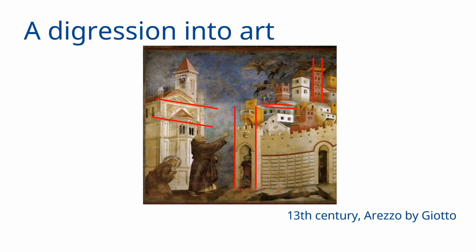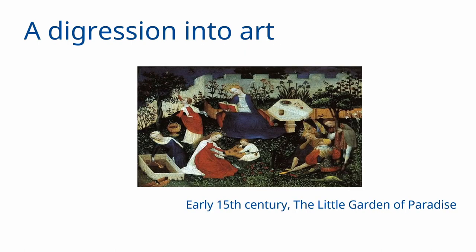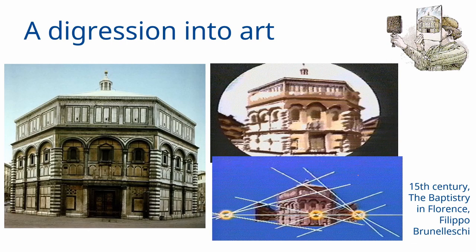Accurate perspective is being attempted by these artists as they try to represent the 3D world onto a 2D canvas or wall, but they are not exactly there yet. Then in the early 15th century, in a painting called 'The Little Garden of Paradise,' we can see more effort being made to represent perspective accurately. Parallel lines are mostly still parallel — the edges of the box in the lower left and the edges of the wall are parallel — however the edges of the top of the table appear to converge at a point, showing some notion of perspective, though the entire painting does not subscribe to it.